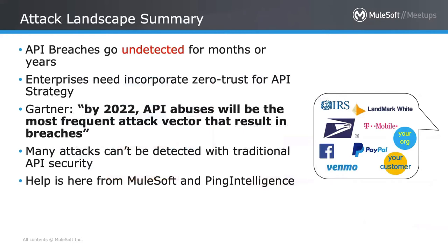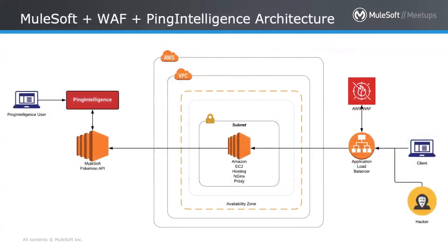To summarize: API breaches are going undetected for months and years. Enterprises need to incorporate a zero trust posture for their collective API strategy. Gartner says by 2022, increases in the sophistication, velocity, and number of attacks resulting in data theft will peak. Most API attacks today go undetected — which is why we're partnering with MuleSoft to protect you from this.